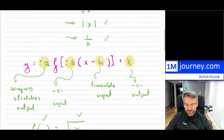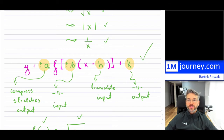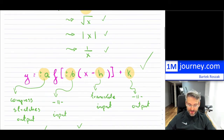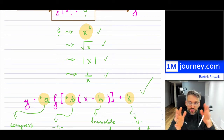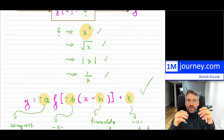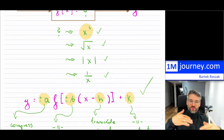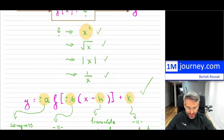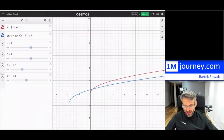It turns out there is no difference across functions — that's why when you study these translations, you typically take just a few parent functions and try to see if you understand the compressions and stretches in the horizontal (inputs), in the vertical (outputs), and any reflections. So if I take, for instance, the absolute value function, it's going to be exactly the same thing.